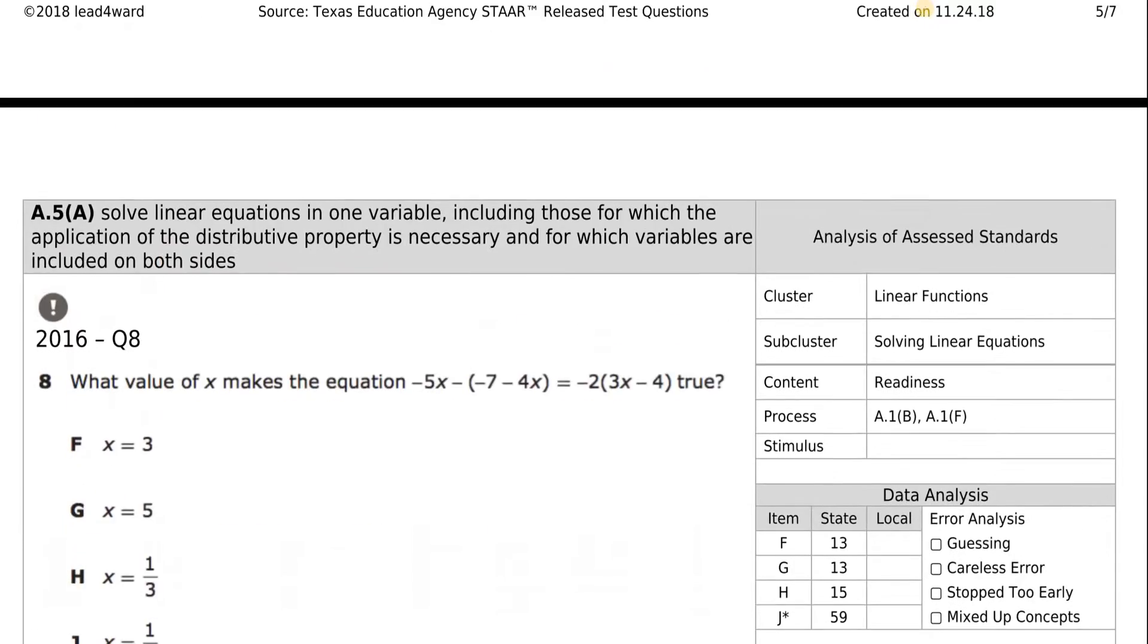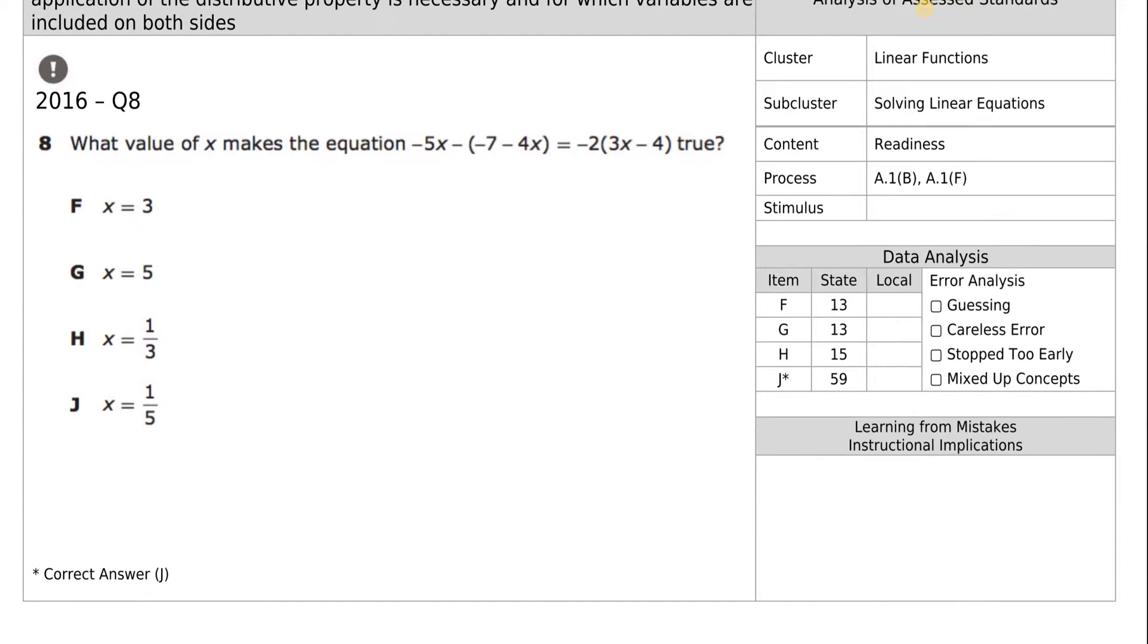We're down to our last two. We have a negative here. This confuses some students on what we're supposed to be distributing. It's an imaginary 1 there that we just don't write. So we have the negative 5x. Negative 1 times negative 7 is positive 7. Negative 1 times negative 4 gives us a positive 4x equals negative 6x. That's negative 2 times 3x. And then negative 2 times negative 4 is positive 8.